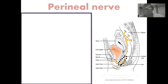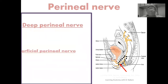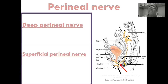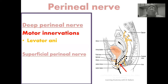The second branch is the perineal nerve. After giving off the inferior rectal nerve, the pudendal nerve runs further to give off the perineal nerve, highlighted here in red. The perineal nerve further subdivides into the deep perineal nerve and the superficial perineal nerve. The deep perineal nerve, highlighted in black, supplies motor innervation to the levator ani muscle — the major structural component of the pelvic floor.